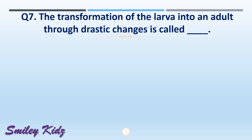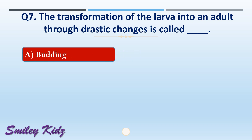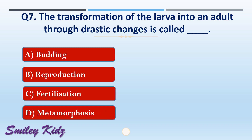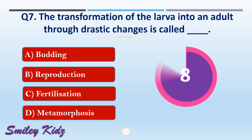Question number seven: the transformation of the larva into an adult through drastic changes is called dash. The options are: A) budding, B) reproduction, C) fertilization, or D) metamorphosis. The right answer is option D, metamorphosis. The transformation of the larva into an adult through drastic changes is called metamorphosis.